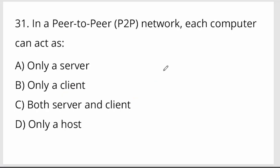In a peer-to-peer (P2P) network, each computer can act as both a server and a client. Both computers act as a server at one time and a client at another time.